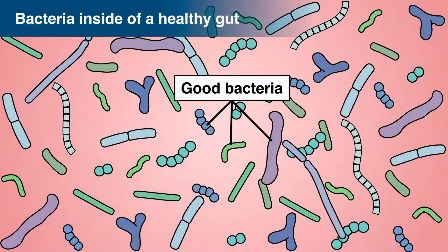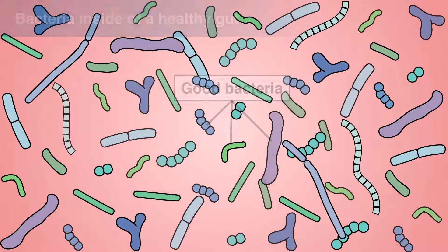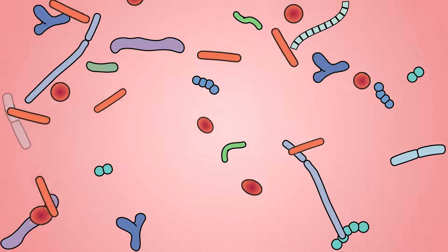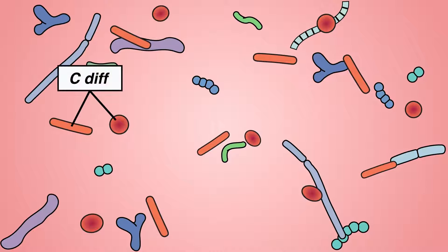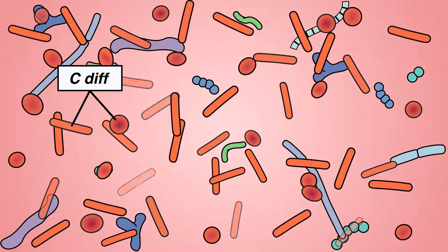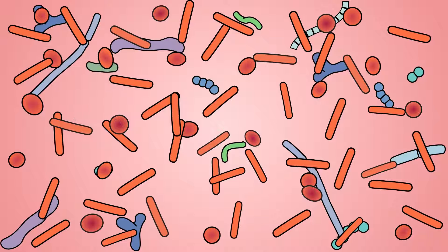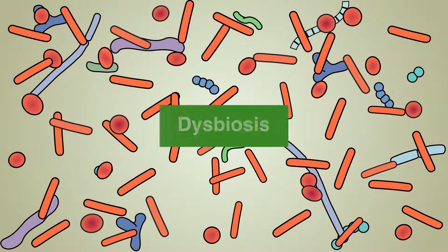Antibiotics used to treat C. diff can also kill the good bacteria in your gut that normally fight off bad bacteria like C. diff. This means C. diff can grow back again when antibiotic treatment is stopped. The imbalance between the good and bad bacteria is called dysbiosis.